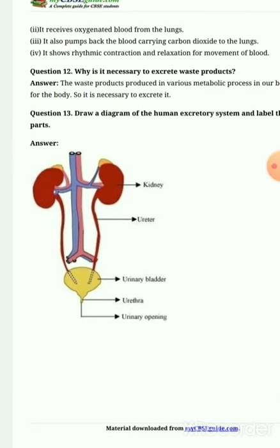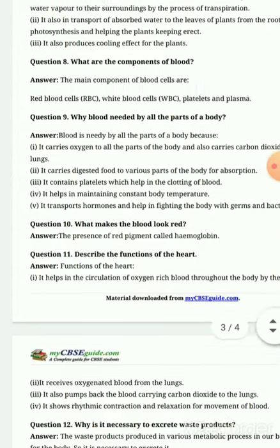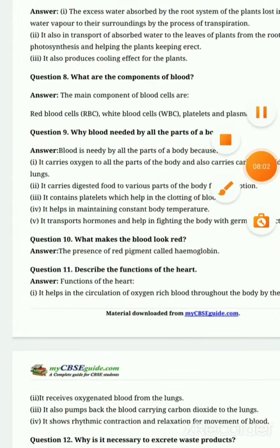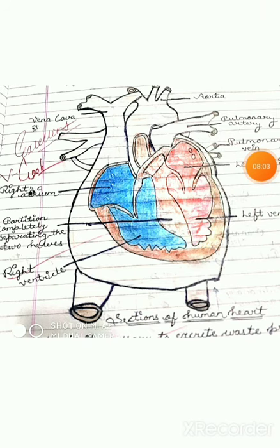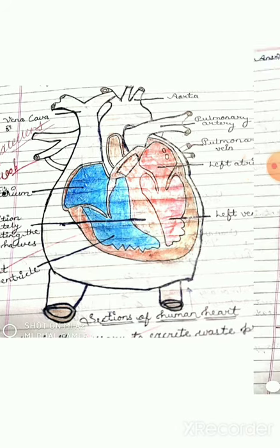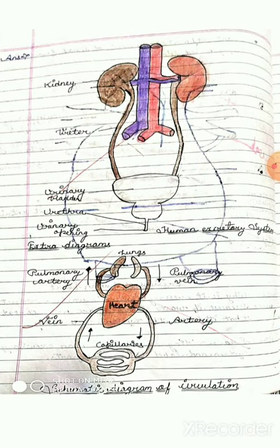Question number 13: you have to draw the diagram of the human excretory system and label it. Additionally, you also have to draw the heart diagram in your copy. The diagram is given in your book. Draw the systematic diagram of circulation — I have explained this before.